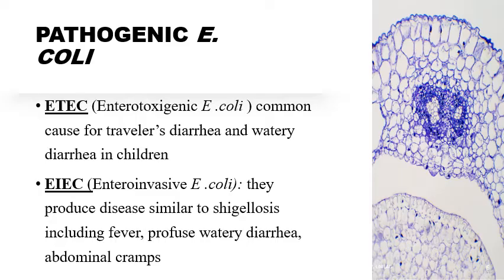We also have enteroinvasive E. coli, which produces a disease similar to Shigellosis — a common foodborne disease attributed to Shigella. The symptoms are similar and include fever, profuse watery diarrhea, and abdominal cramps. The mechanism of action is by invading the epithelial cells and causing inflammation and tissue damage. Sources of infection include contaminated water, raw seafoods, and salad.